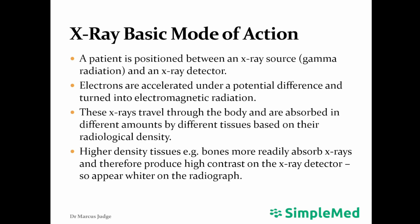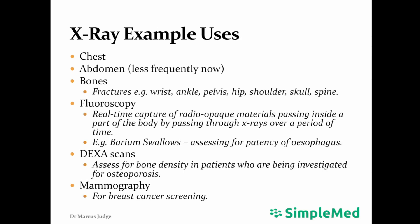This radiograph will be a 2D image. Examples of where we might use x-rays include chest x-rays, for example when assessing for a pneumonia, x-rays of the bones to assess for fractures, fluoroscopy such as barium swallows which assess for the patency of the oesophagus in patients who might be having swallowing difficulties, dexascans which are used to assess bone density for patients being investigated for osteoporosis, and mammography which is used in breast cancer screening. It is noted that x-rays have very low resolution for soft tissue injury.